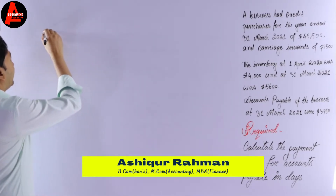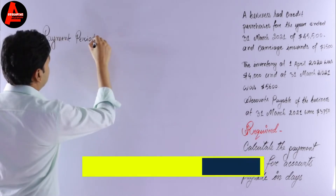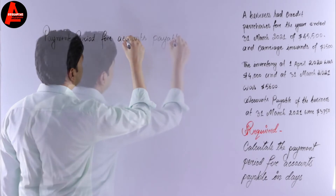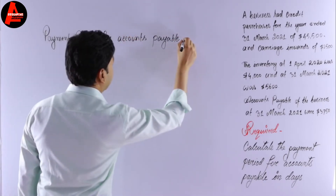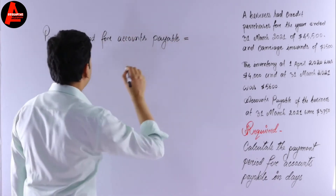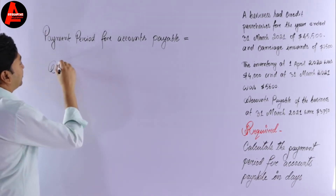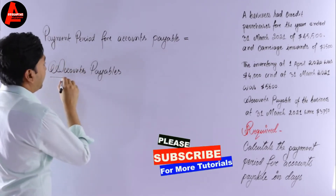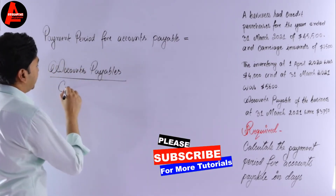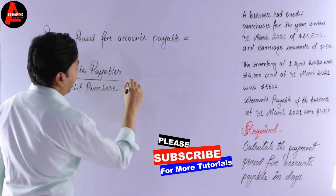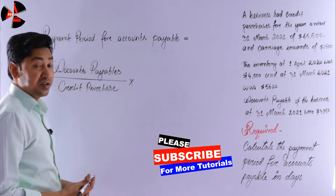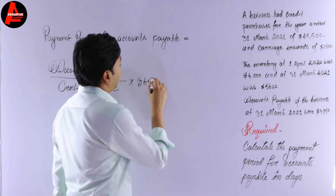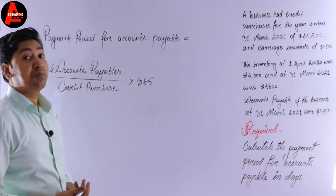The formula is: Payment Period for Accounts Payable = Accounts Payable divided by Credit Purchases, multiplied by 365. If you said multiply by 365, you are correct.